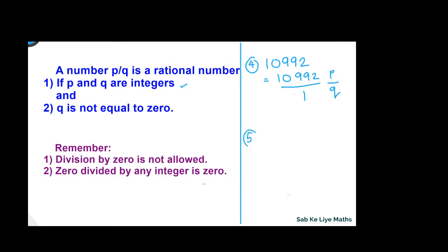Next example: minus 20. We can write minus 20 upon 1, in the form P by Q, where P is equal to minus 20 and Q is equal to 1. Both are integers, and Q is equal to 1, which is not equal to 0. So again, this is a rational number.